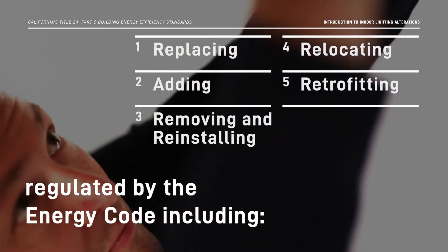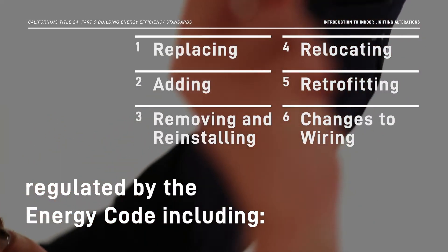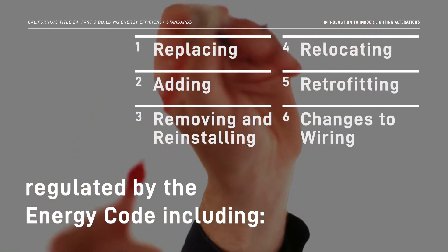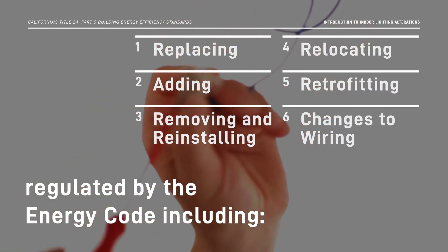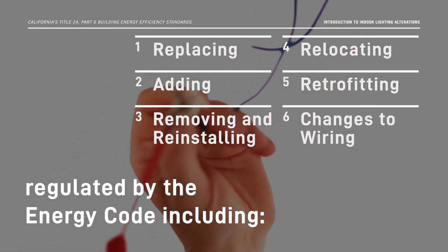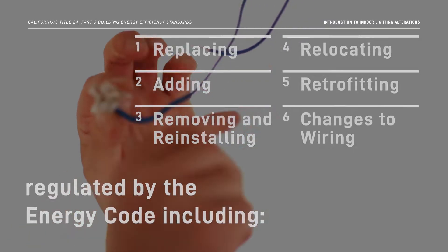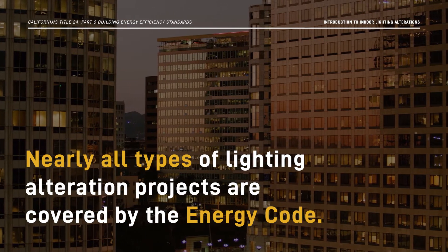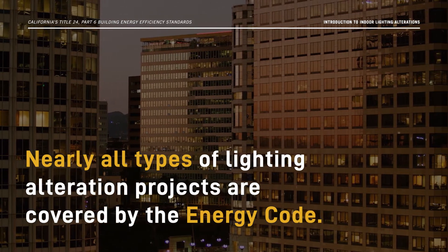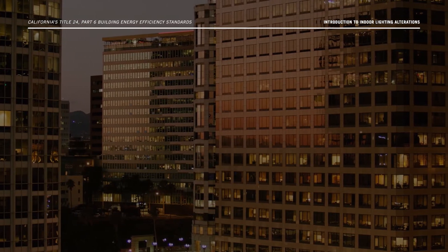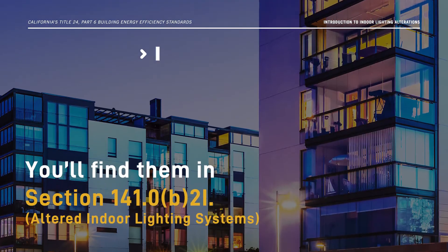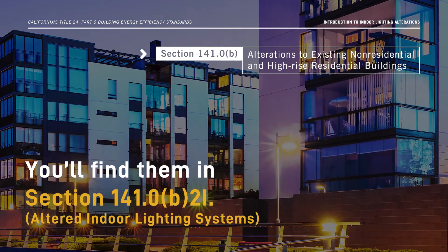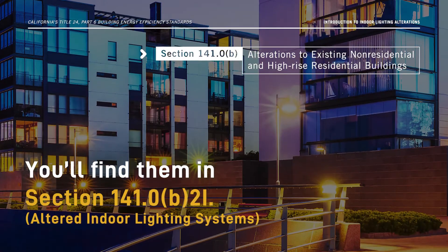It also includes changes to wiring, like connecting luminaires to new switches, relays, or branch circuits. Nearly all types of lighting alteration projects are covered by the Energy Code. You'll find them in section 141.0b2i.